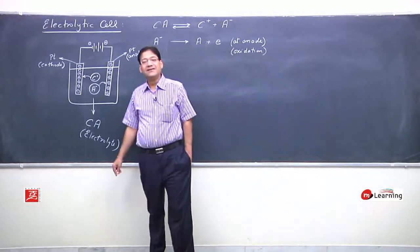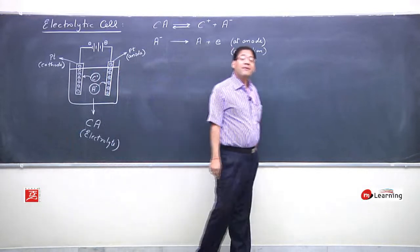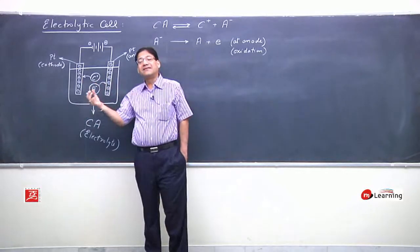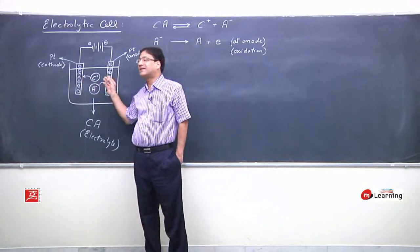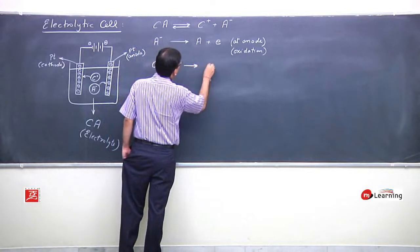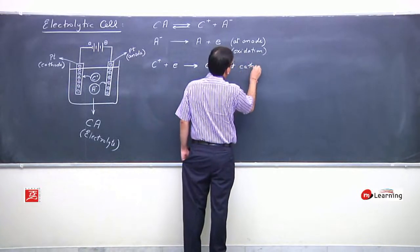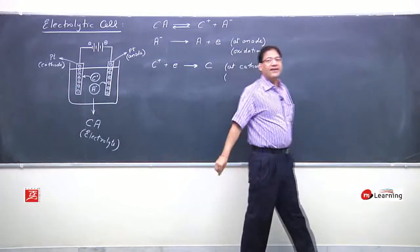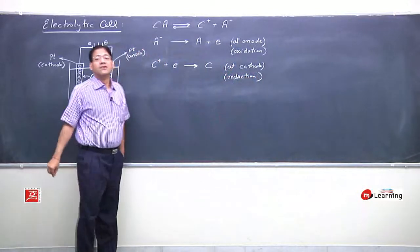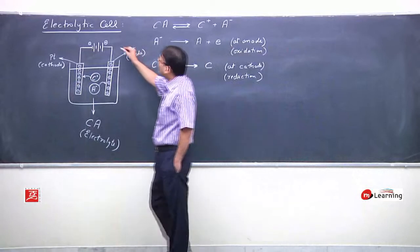After writing the anode reaction, we always write the cathode reaction — the reduction reaction. The cation moving toward the cathode has a deficiency of electrons, while the cathode has many extra electrons. So the cation goes to the cathode, acquires an electron, and gains an electron from the cathode. Gain of electron or addition of electron is termed reduction. The driving force for this entire phenomenon is the battery.